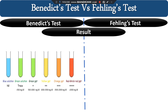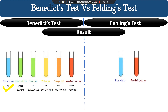Regarding results: in the Benedict test, you can get different types of colors. When the reaction is negative you get a blue color, which comes from the copper²⁺ ion. Depending on the concentration of sugar you get different colors — green solution, green precipitate, yellow, orange, or brick-red precipitate. In the Fehling test, you can get either blue or a brick-red precipitate, so only these two possibilities exist.